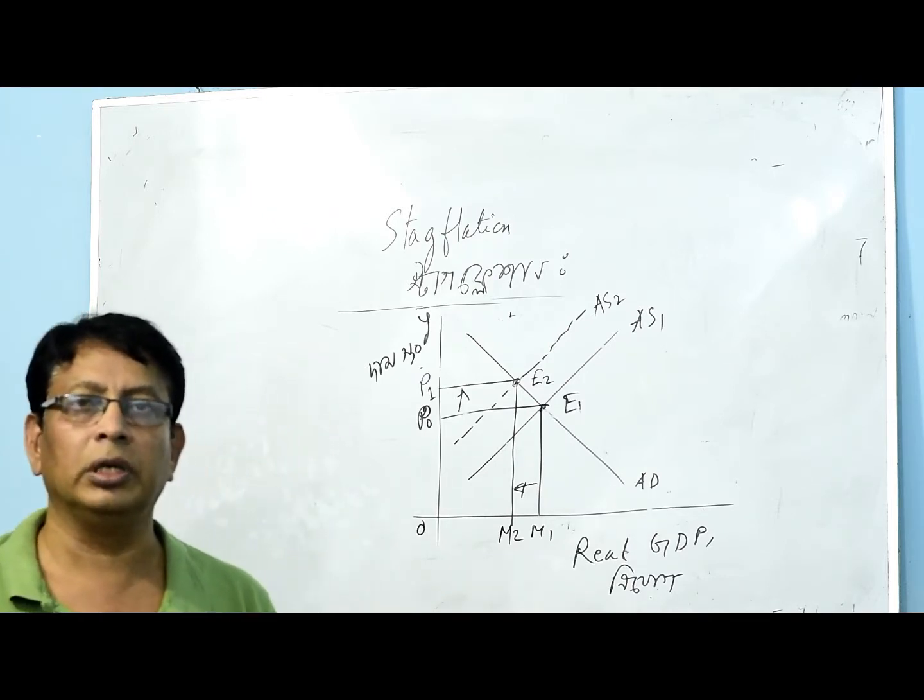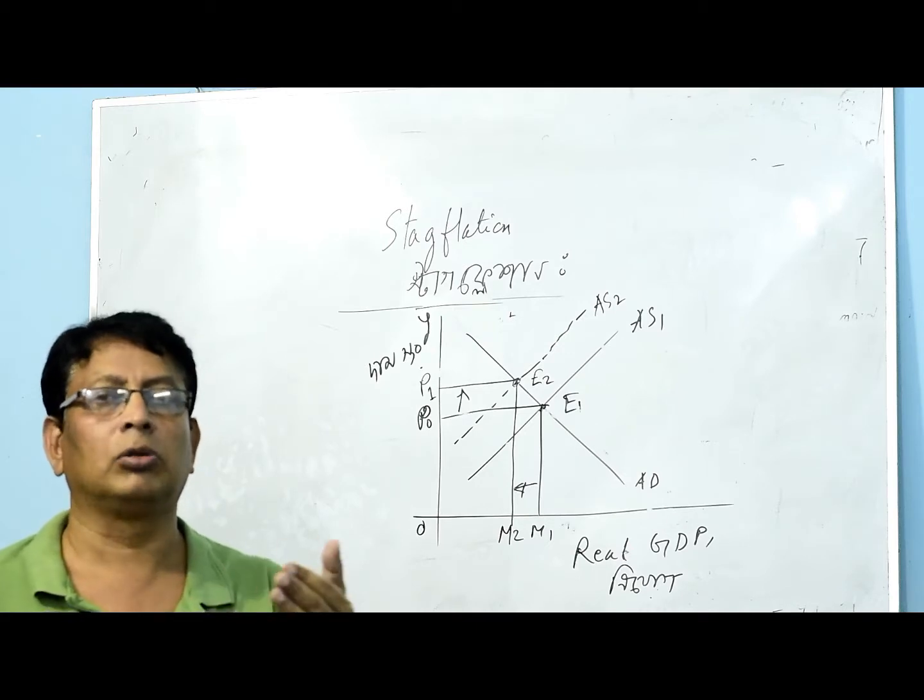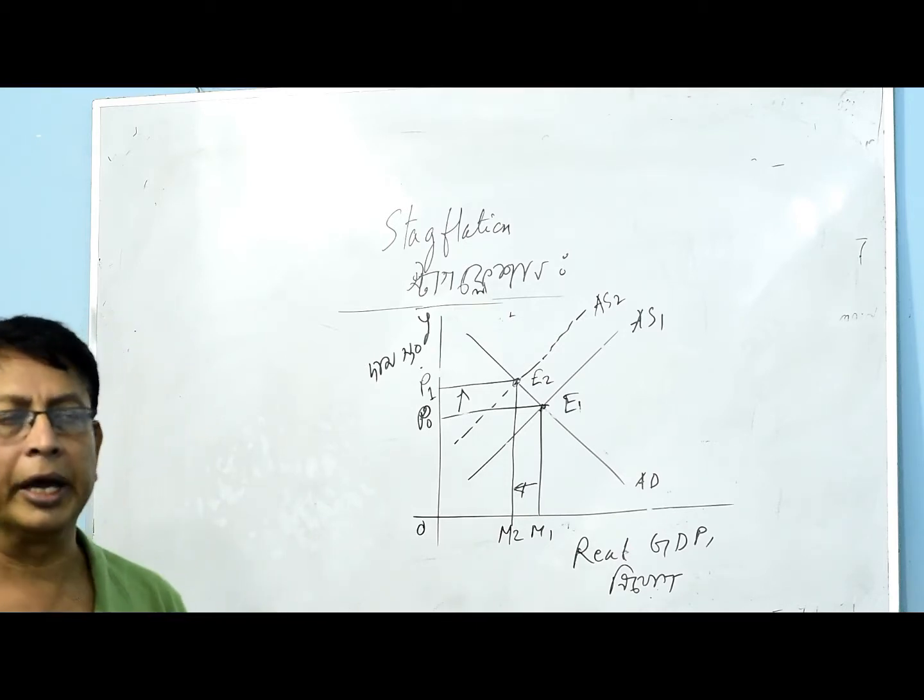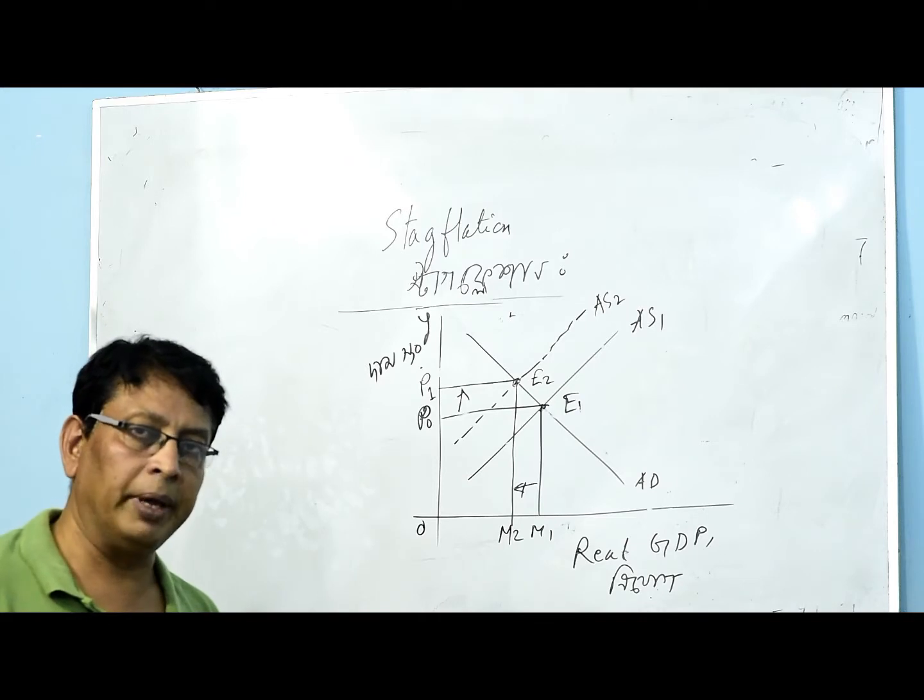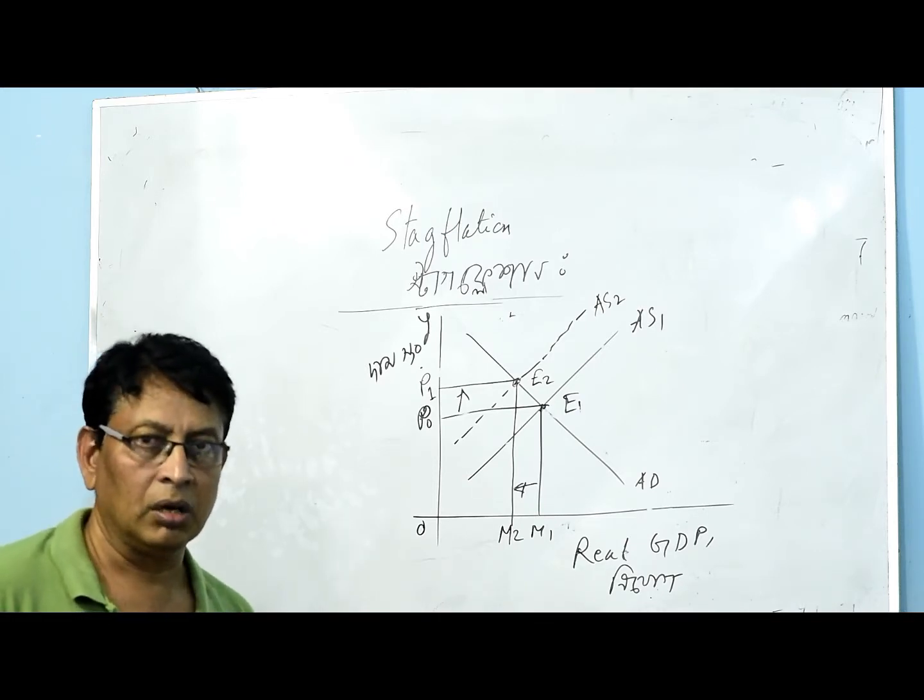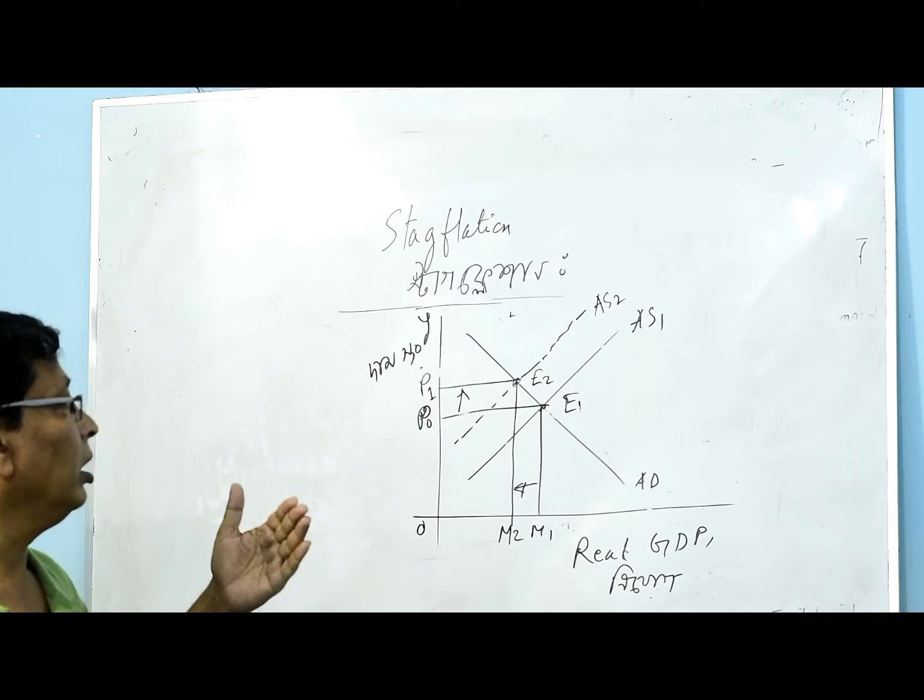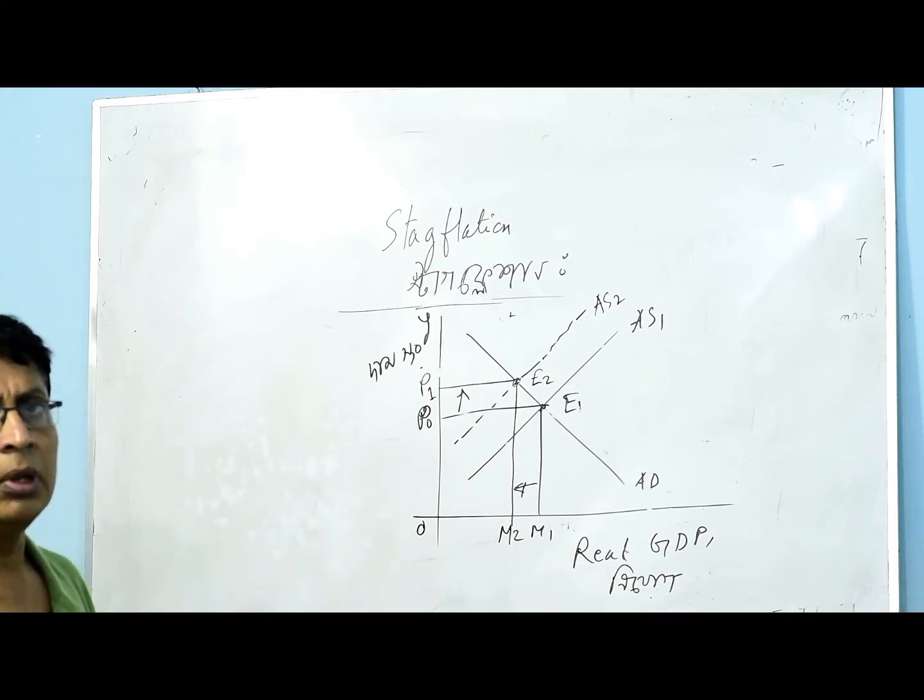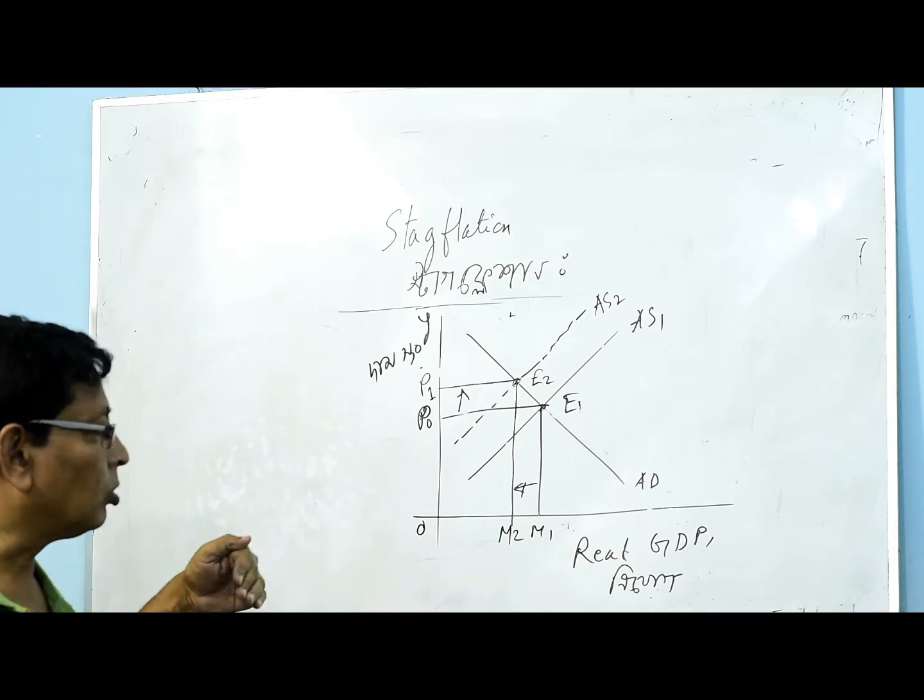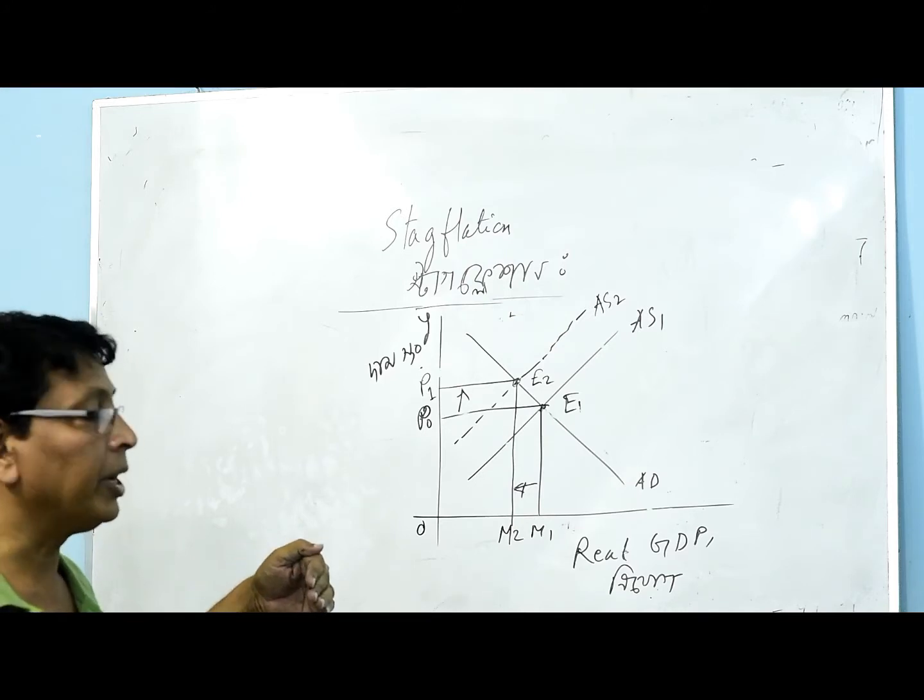The price level P1 is higher and this shows how AS shifts affect equilibrium.